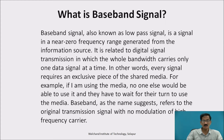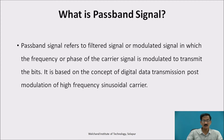Baseband, as the name suggests, refers to the original transmission signal with no modulation of the carrier frequency. A passband signal refers to a filtered or modulated signal in which the frequency or phase of the carrier signal is modulated to transmit the bits. It is based on the concept of digital data transmission post modulation of a high-frequency sinusoidal carrier.